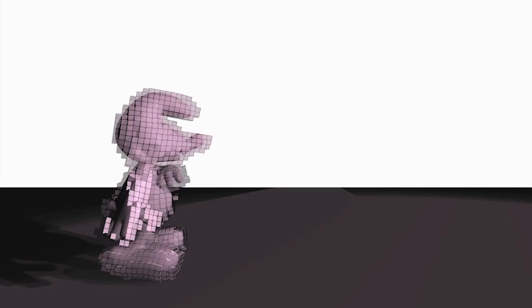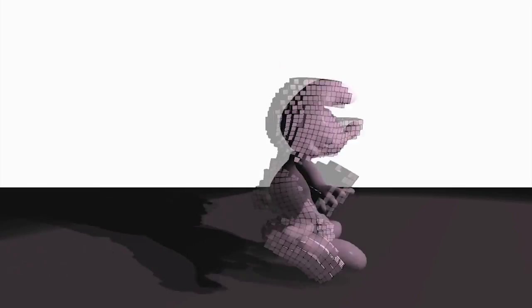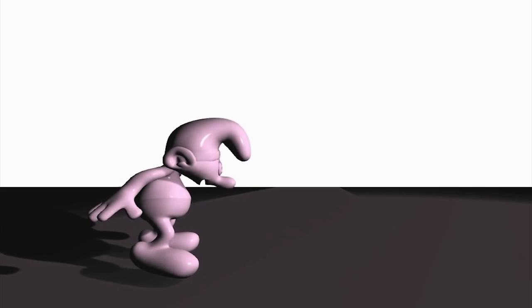In this experiment, we show a Smurf character performing a jumping motion. Notice the softer head and nose that consist of mainly fat, and the more rigid arms and feet that consist of mainly muscle.